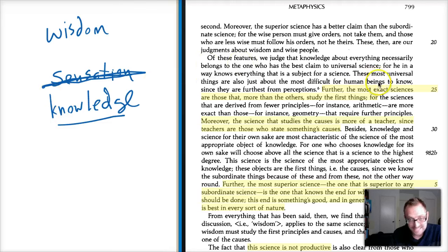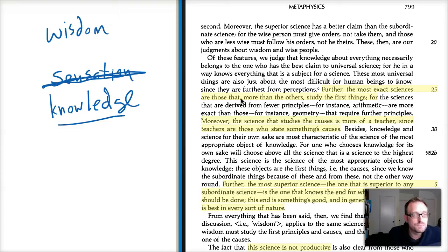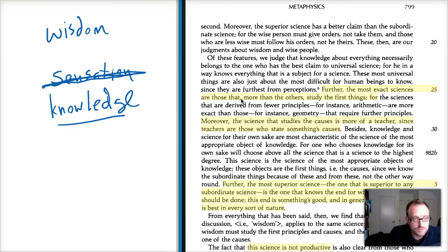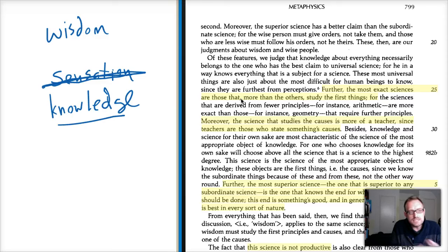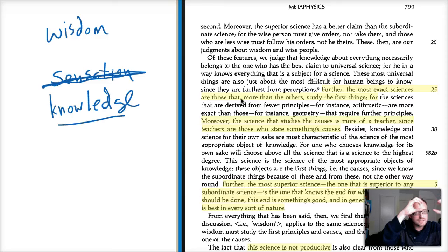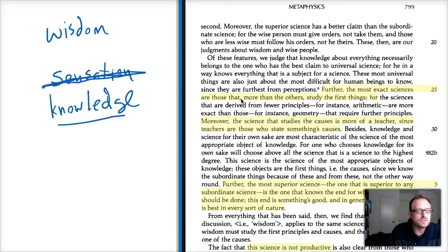The most exact sciences are those that more than others study the first things. The more exact a science is, the closer it is to the most primary principles. Sciences derived from fewer principles — for instance arithmetic — are more exact than those requiring further principles, like geometry. The more specified a subject gets by articulating more principles and differences among principles, the further you are from the most exact science of being. Aristotle's conception of exactness is not being verbose; quite the reverse — to be exact is to be simple, to identify the universal first principle.